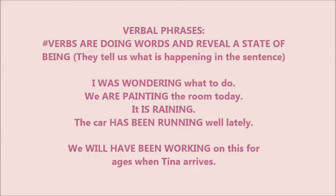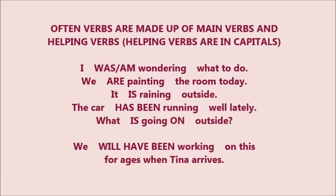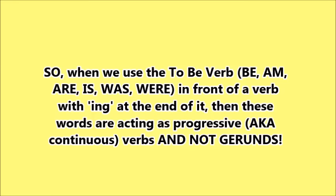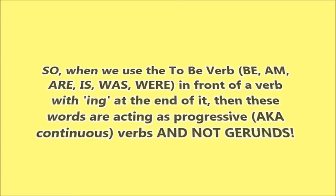The verbs with -ing at the end have other words joined onto them — these are auxiliary verbs, or helping verbs. When we use the to-be verb — am, are, is, was, were — in front of a verb with -ing at the end, those words are acting as progressive, also known as continuous verbs, and not gerunds. They make up a verbal phrase. That is the way to distinguish a gerund from a continuous or progressive verb.